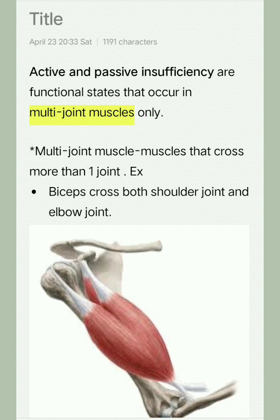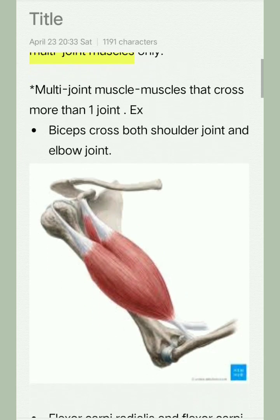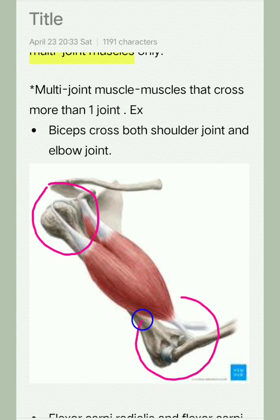Multi-joint muscles are muscles that cross more than one joint. For example, biceps crosses both the shoulder joint and the elbow joint. As you can see in this image, biceps brachii crosses both the shoulder joint and the elbow joint.